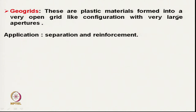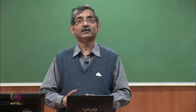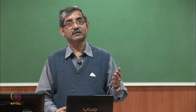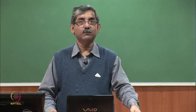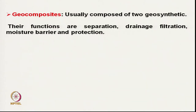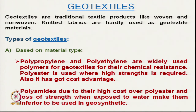Geogrids are plastic materials formed into a very open grid-like configuration with very large apertures, basically used to retain rocks on inclined slopes. They are used for separation, drainage, filtration, moisture barrier, and protection. If we require multiple functions, we can use geocomposites. Our focus, as mentioned, will be basically on geotextiles.